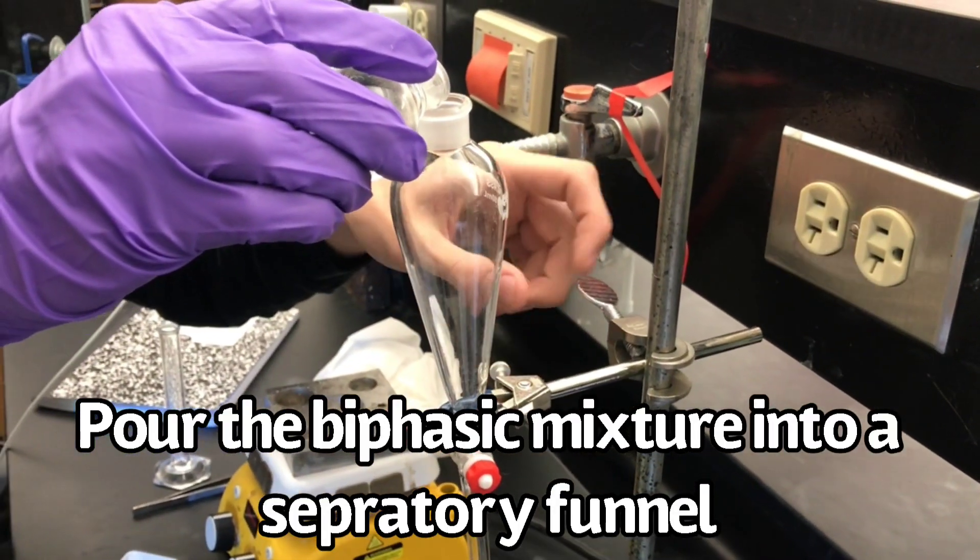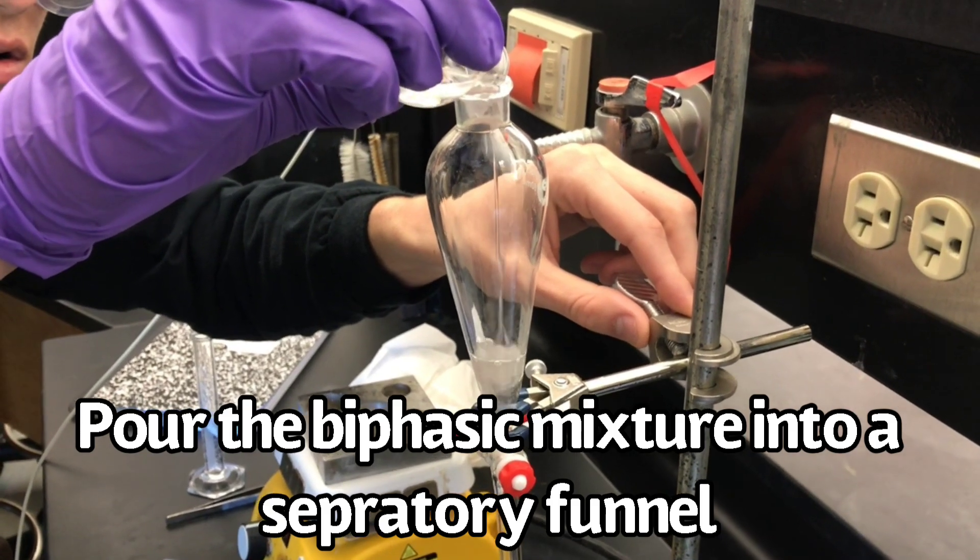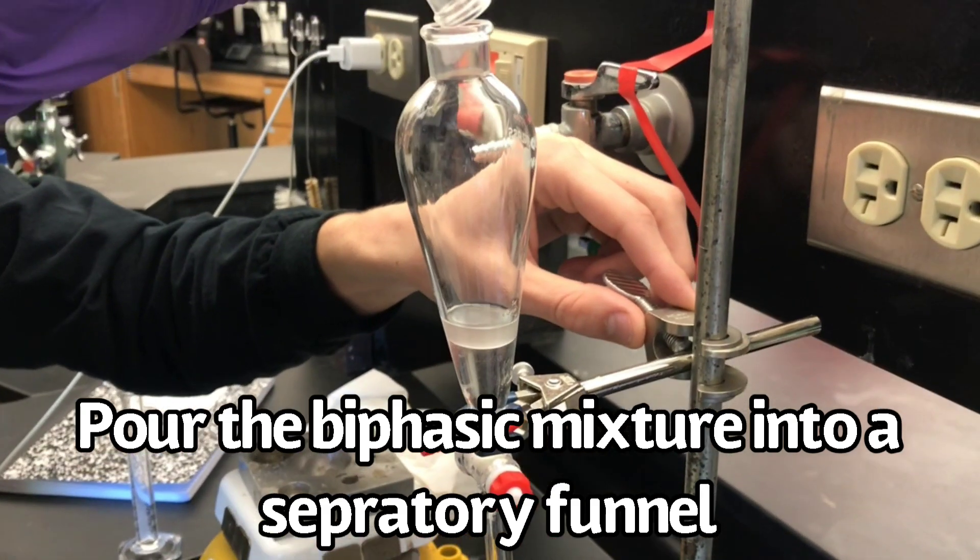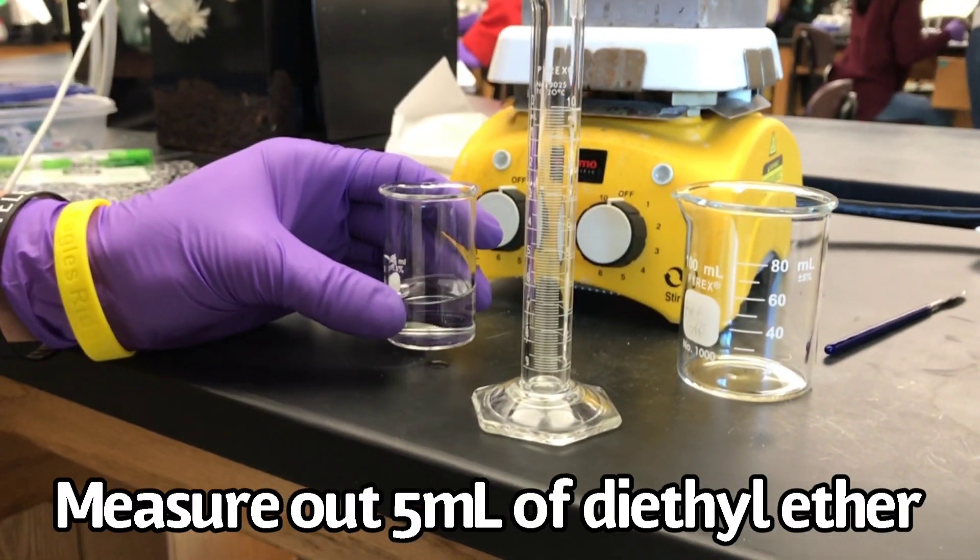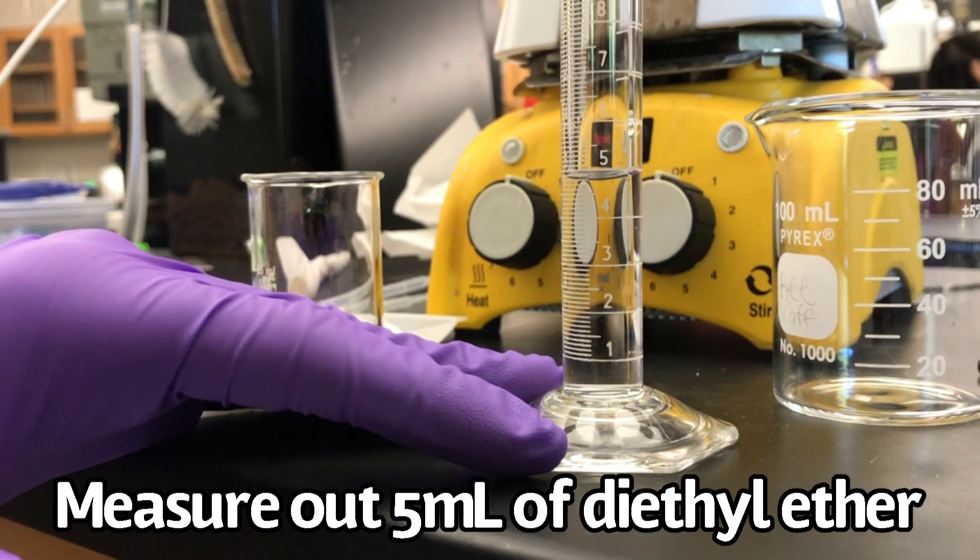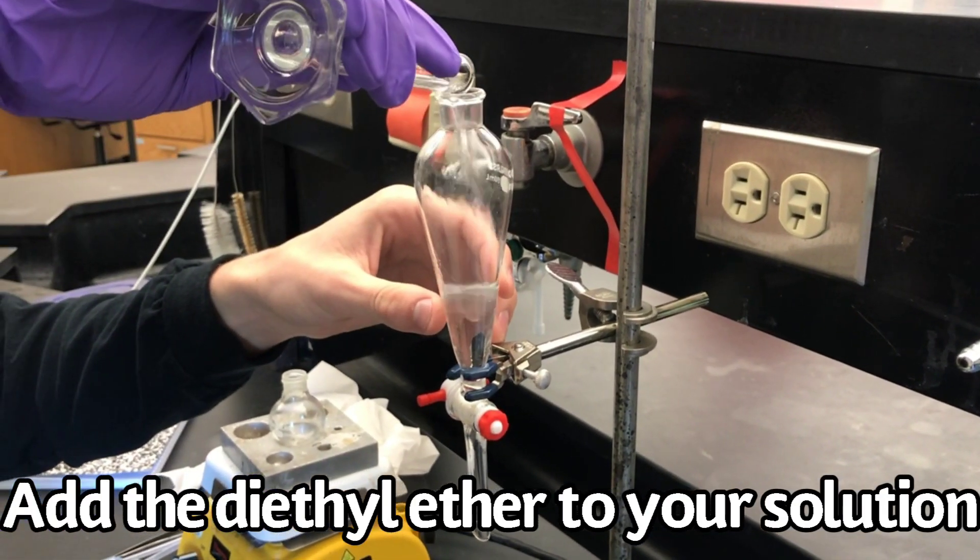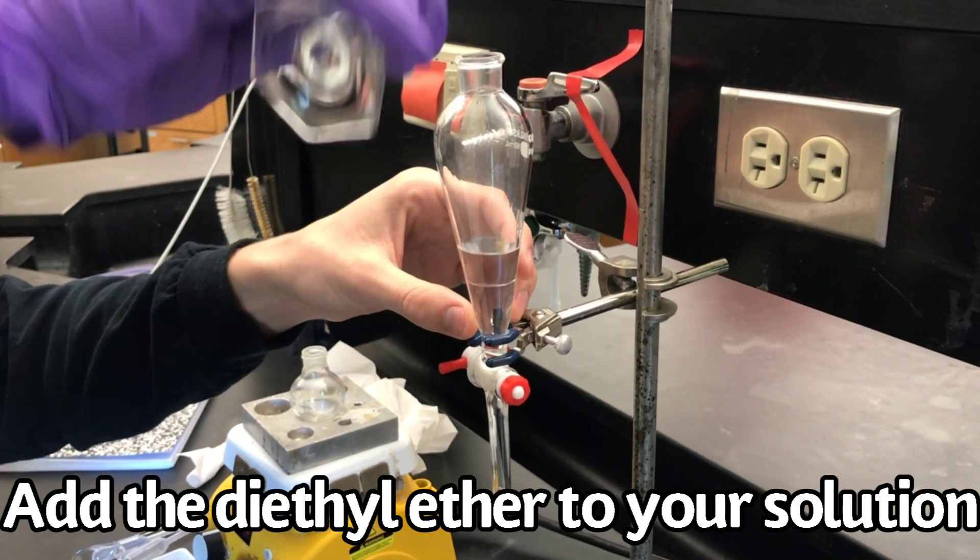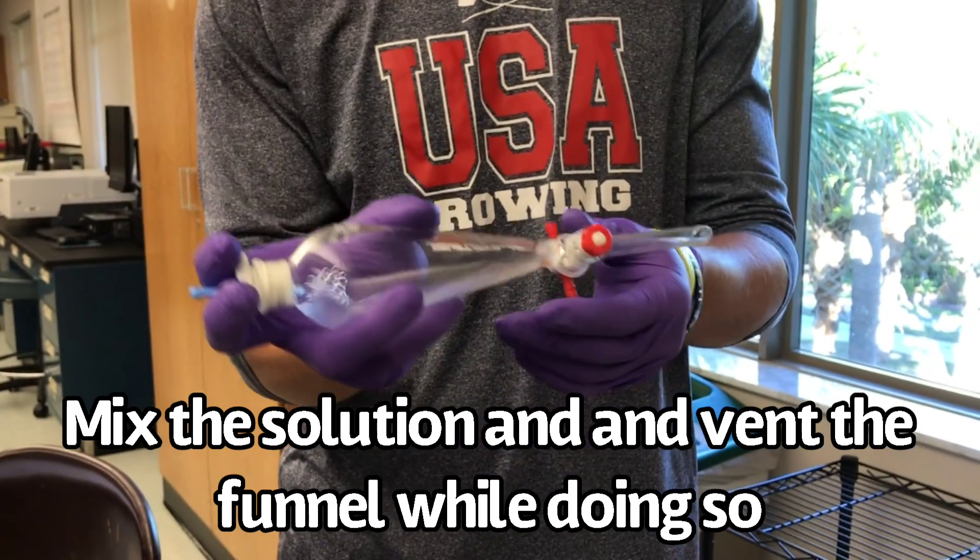Next, pour the biphasic mixture into a separatory funnel. Measure out 5 milliliters of diethyl ether. Add the diethyl ether to your solution. Mix the solution in the separatory funnel and remember to vent the funnel while doing so.